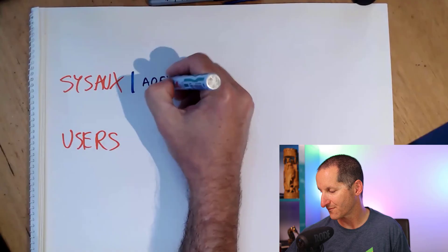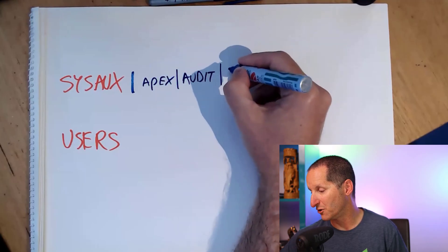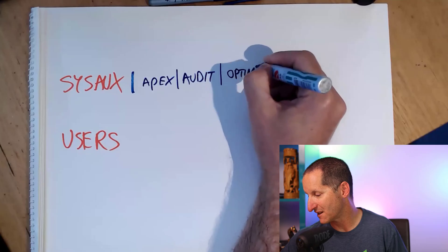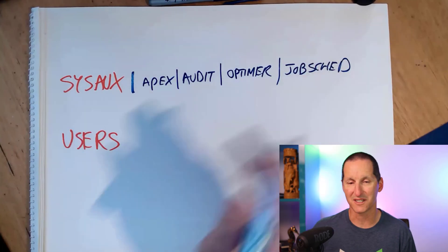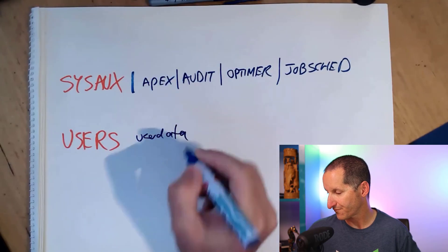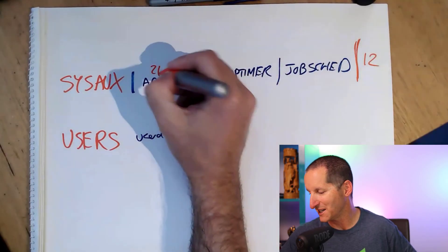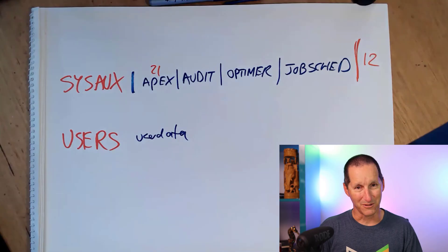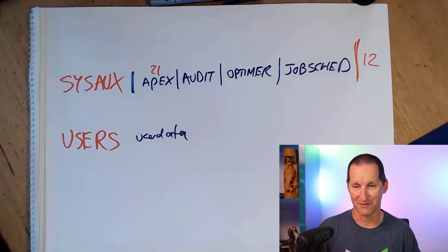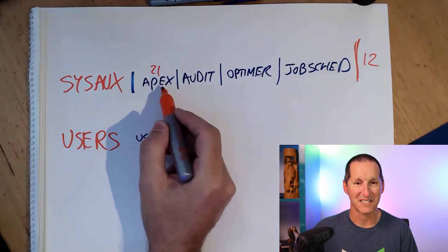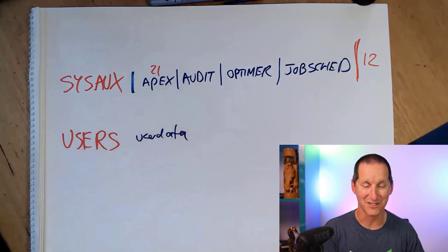What's in SYSAUX typically? When you install APEX it goes in there, plus audit information, internal repository stuff like optimizer statistics, job scheduler logs, and so on. That's also where your user data sits. So when you come to upgrade APEX — say SYSAUX has grown out to 12 gigabytes with APEX 21 installed — and you want to put in APEX 22, you've got a problem. Temporarily you need to go past that 12 gig limit, which won't be allowed. The only way out would be to export all your applications and data, drop APEX 21, install APEX 22, and re-import everything — which is not fun.